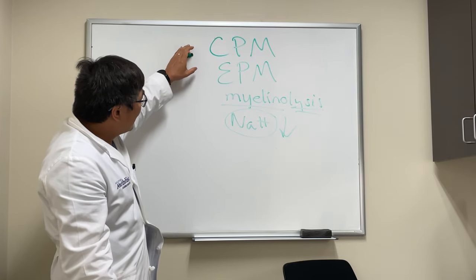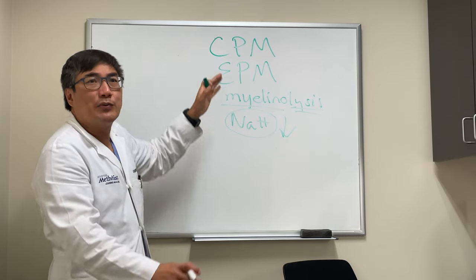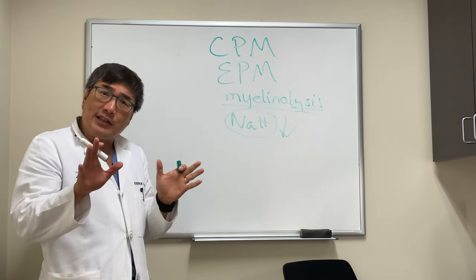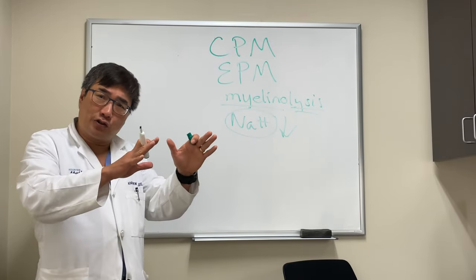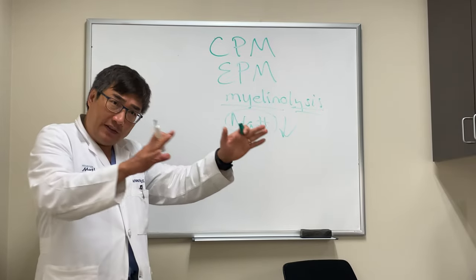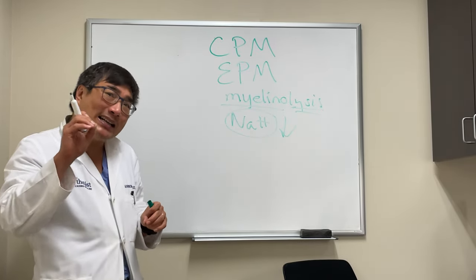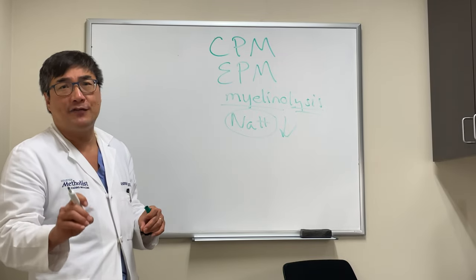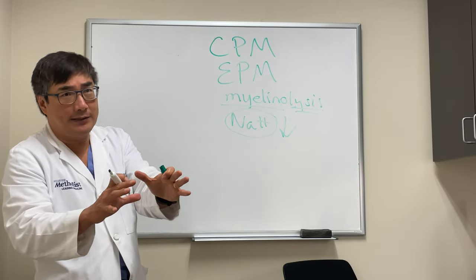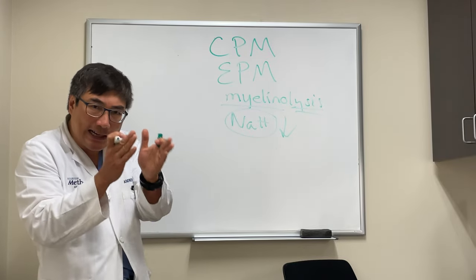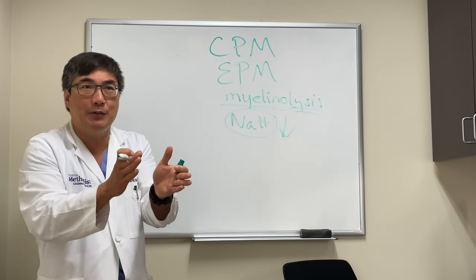Central pontine myelinolysis presents to us with ophthalmoplegia. The pons is the final horizontal gaze pathway for eye movement because the parapontine reticular formation (PPRF) and the sixth nerve nucleus both live in the pons. So when patients have pontine myelinolysis, they may have a pontine eye movement problem.